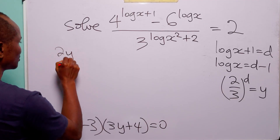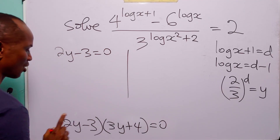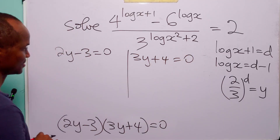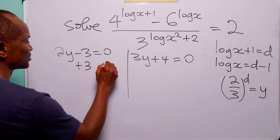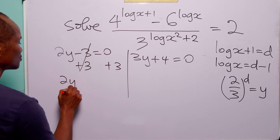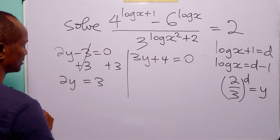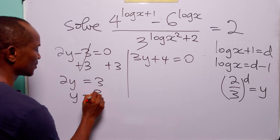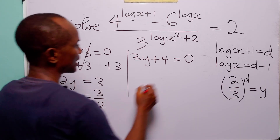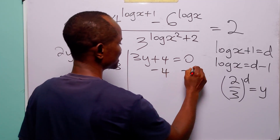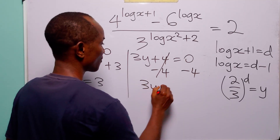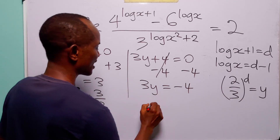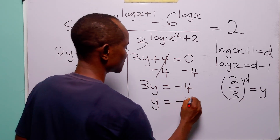The factorized form is 2y minus 3 times 3y plus 4 equals 0. This gives either 2y minus 3 equals 0, so y equals 3 over 2; or 3y plus 4 equals 0, so y equals minus 4 over 3.